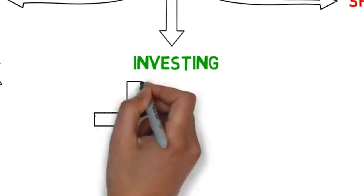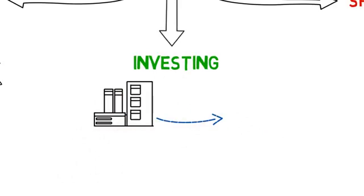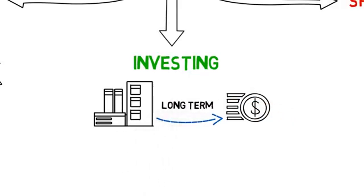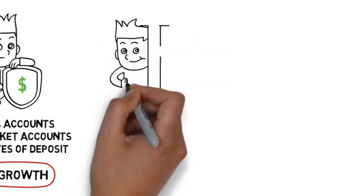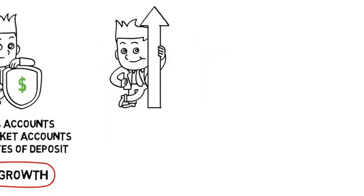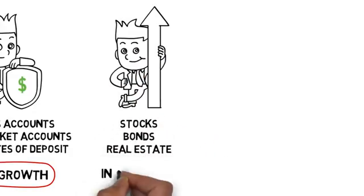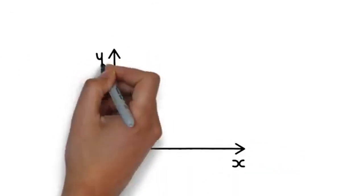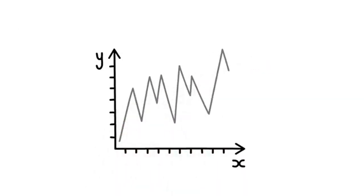Unlike saving, investing is a long-term process. It often involves committing a portion of your money to owning a share of a business, with the expectation that you'll receive a higher return than inflation. The most important factor in investing is the growth of your money. There are many ways to invest, with stocks, bonds, and real estate being the most popular. However, while investing typically offers better returns than saving, it also carries more risk, as the value of your investment bounces up and down, at least when looked at in the short term.